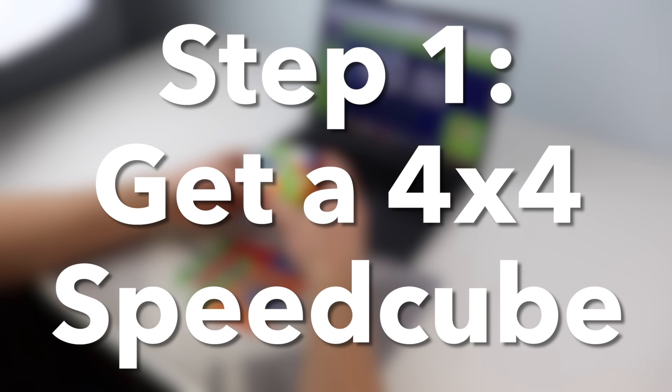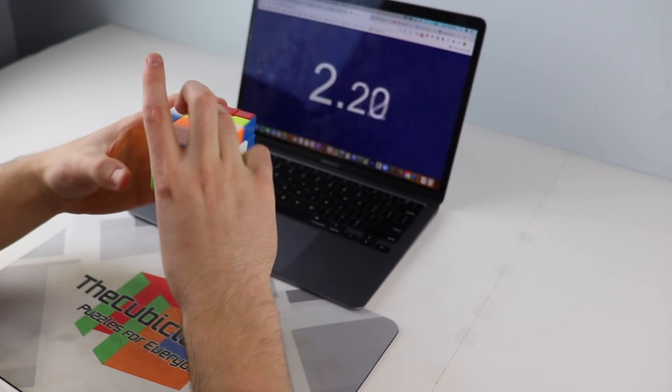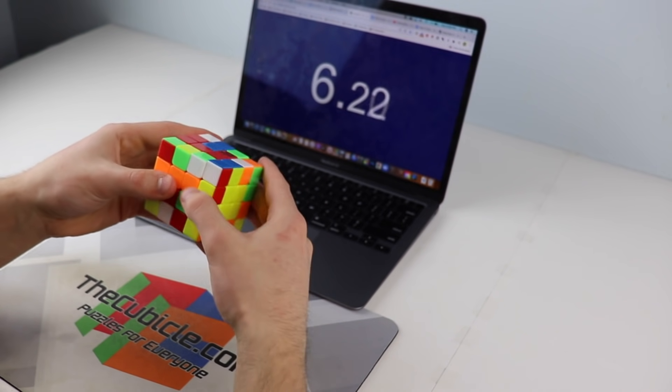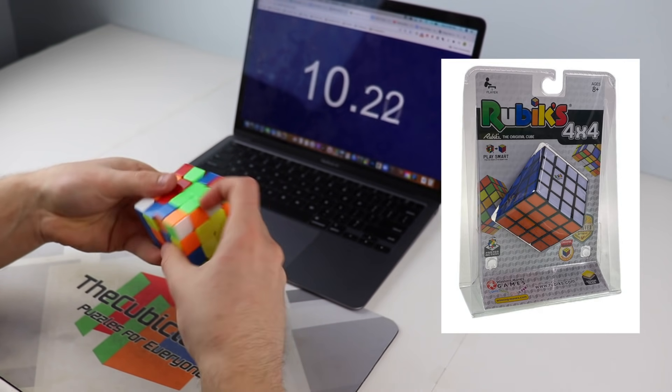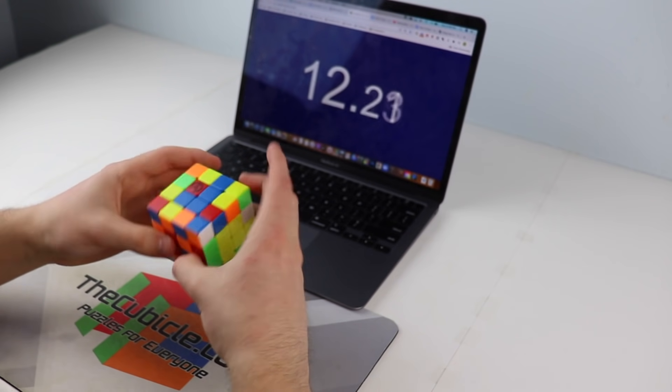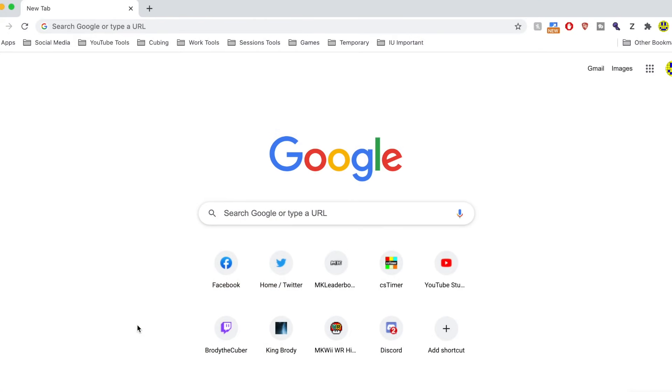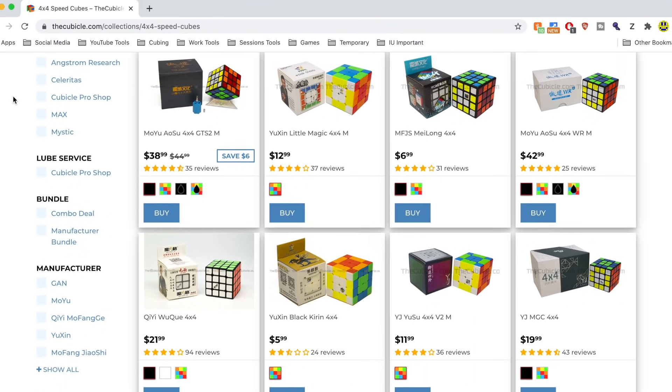Step 1. Get a 4x4 Speed Cube. Unless you've got a really good hobby store in your area, you've probably never even seen a 4x4 for sale in a store. Even then, the 4x4s that those stores sell are just the crappy Rubik's brand 4x4s, and there's no way you'll get a sub 30 on one of those. So what you need to do is hop online, head over to thecubicle.com, and check out the 4x4s that they have for sale there.